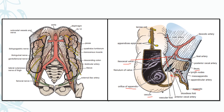In this diagram we can see structures forming the posterior relations of the cecum: the lateral cutaneous nerve of the thigh and the femoral nerve behind the cecum, and certain muscles such as the iliacus and the psoas. Finally, the tip of the appendix is also frequently present behind the cecum.